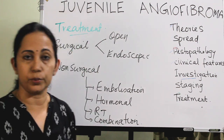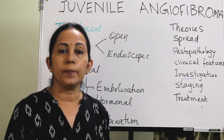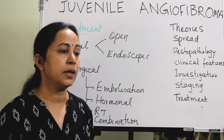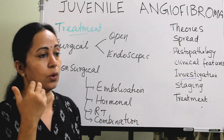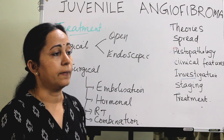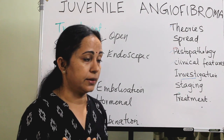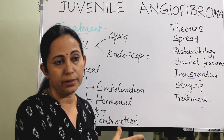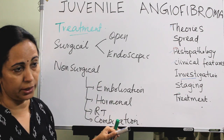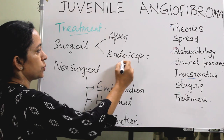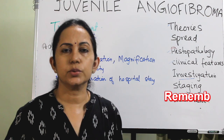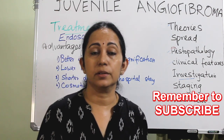Regarding open approaches: there are many surgical approaches for excision of angiofibroma, mainly the transpalatal approach, different types of maxillectomy, infratemporal fossa approaches, and craniofacial resections. Now, endoscopic excision of Juvenile Nasopharyngeal Angiofibroma has become important.